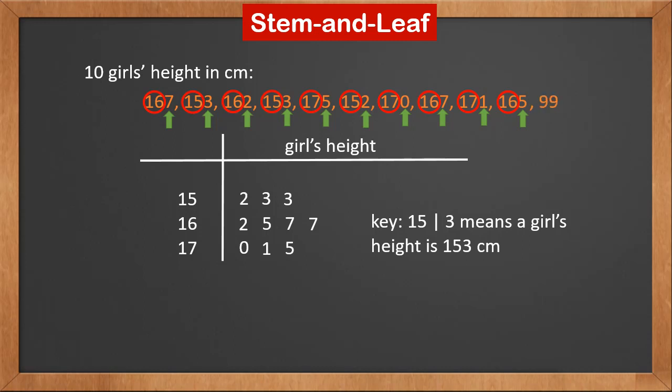What if we add a 2-digit number, 99? Since all stems have 2 digits, we put a leading 0 for 9 and make it 09, then put the last digit 9 next to it.